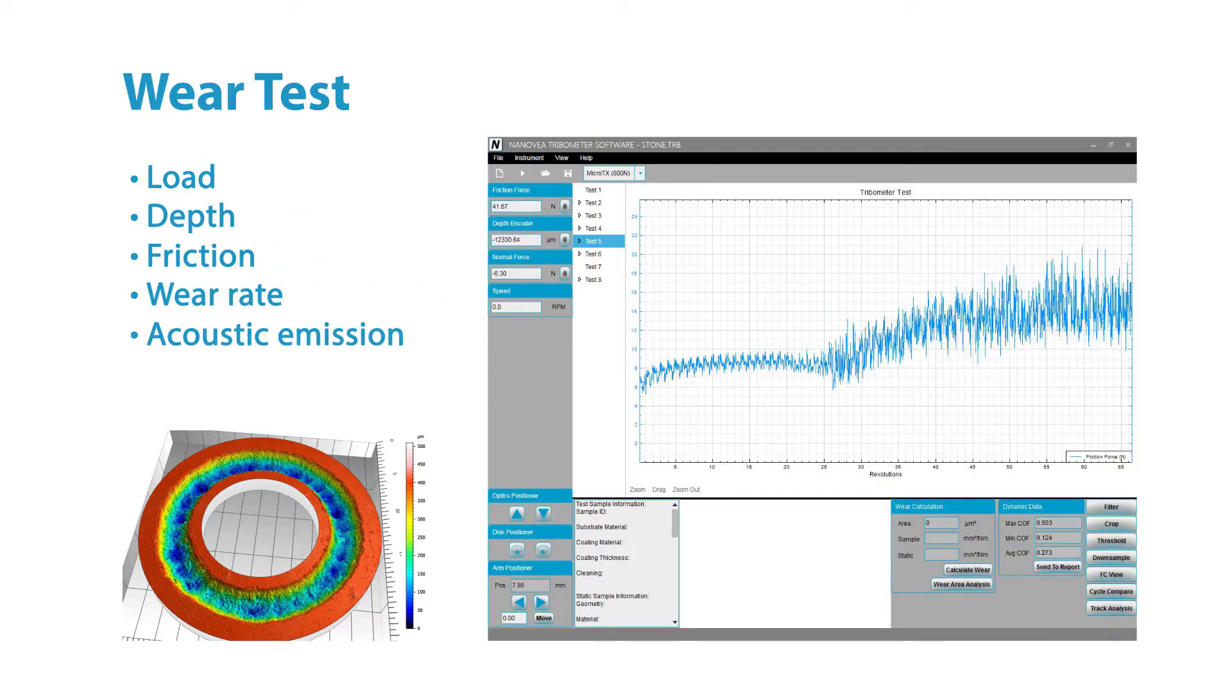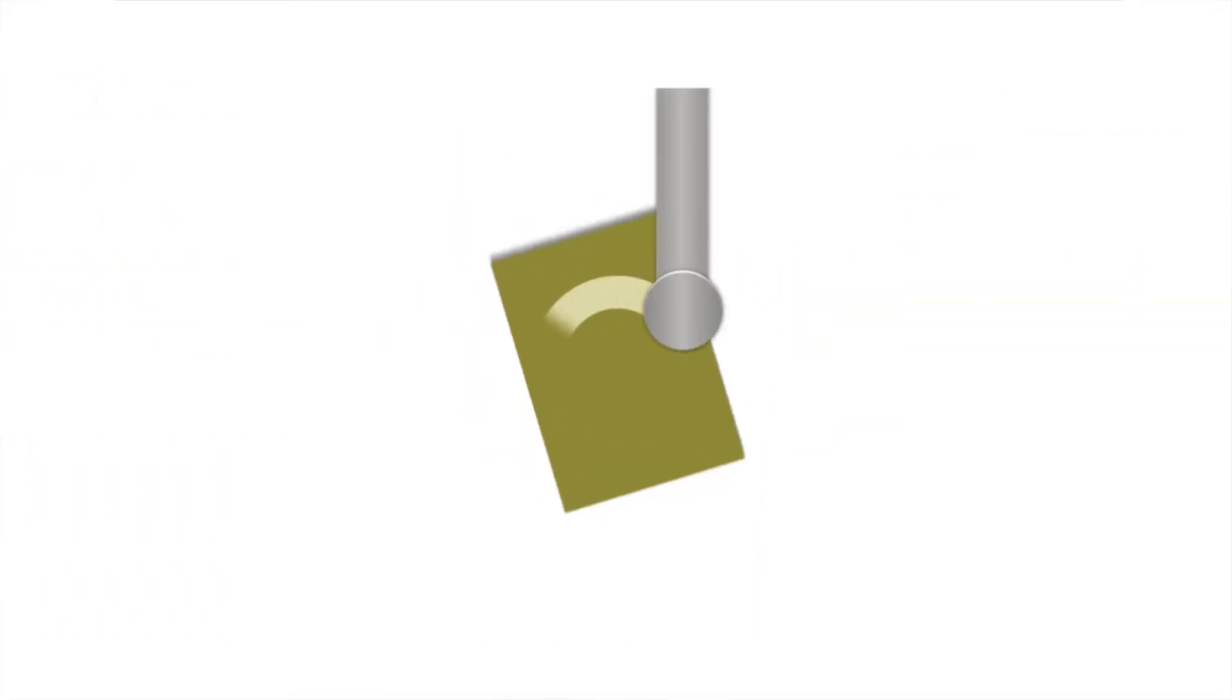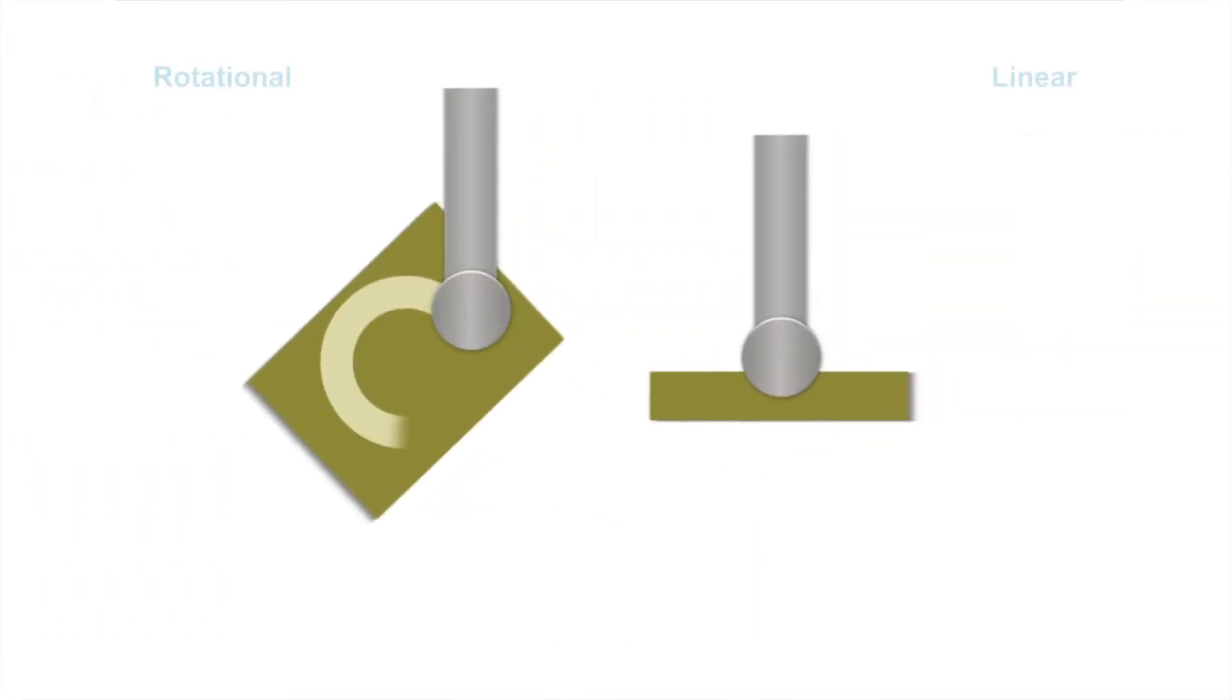But the Nanovia Tribometer is unlike any other in one all-important respect because it has an almost endless range of measurement tools.